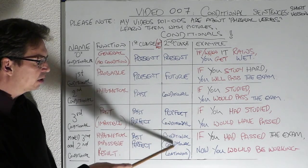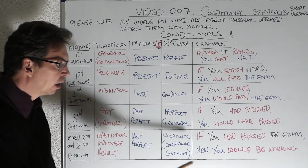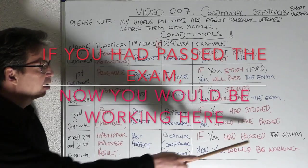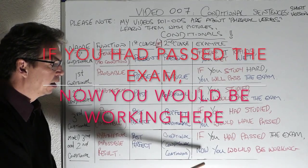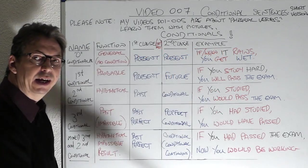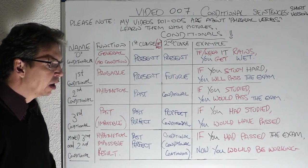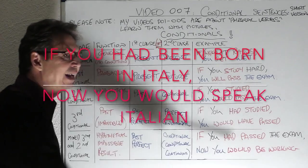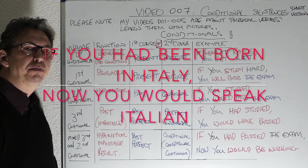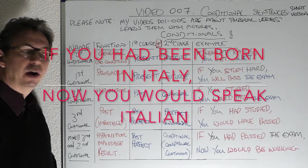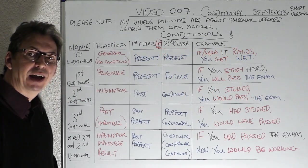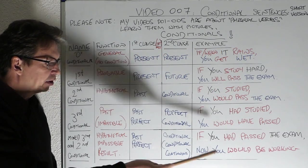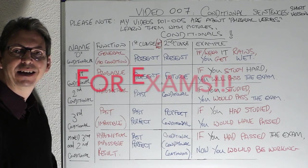We also mix the third conditional with the second conditional. This is a hypothetical impossible result — it's finished, it wasn't possible to do, it's in the past. We use the past perfect from the third conditional with the conditional or the conditional continuous. For example: if you had passed the exam, now you would be working here. Or: if you had been born in Italy, now you would be speaking Italian — or now you would speak Italian.